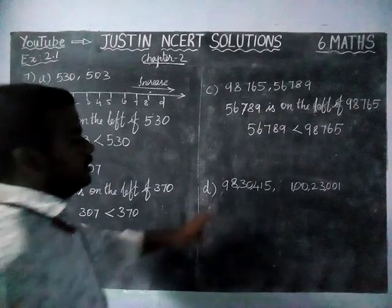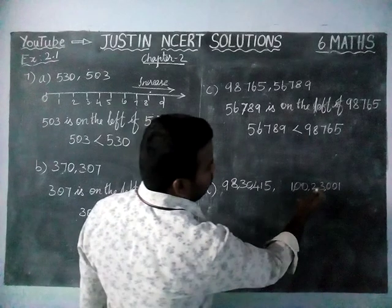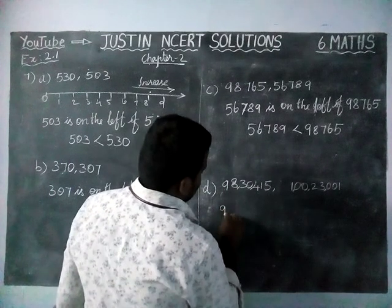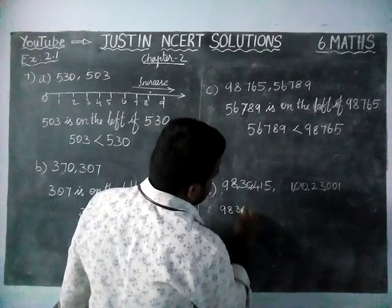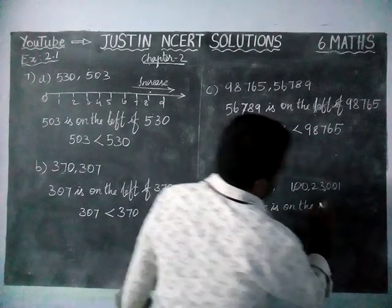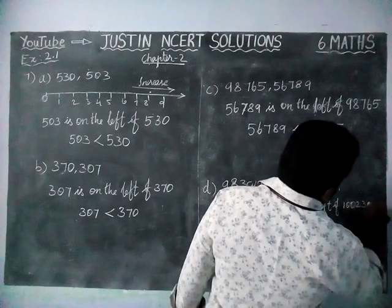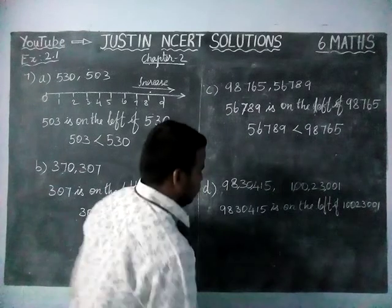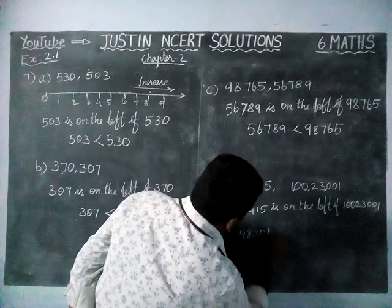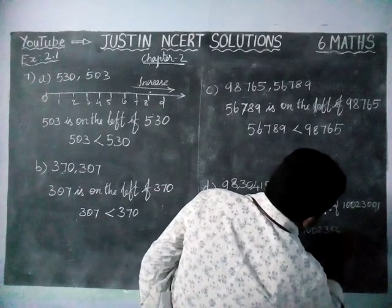Now option D. Here we have 98,30,415 and 1 crore 23,001. The lakhs value is the smallest number, so it will come on the left hand side. 98,30,415 is on the left of 1 crore 23,001, and using the sign: 98,30,415 is less than 1 crore 23,001.